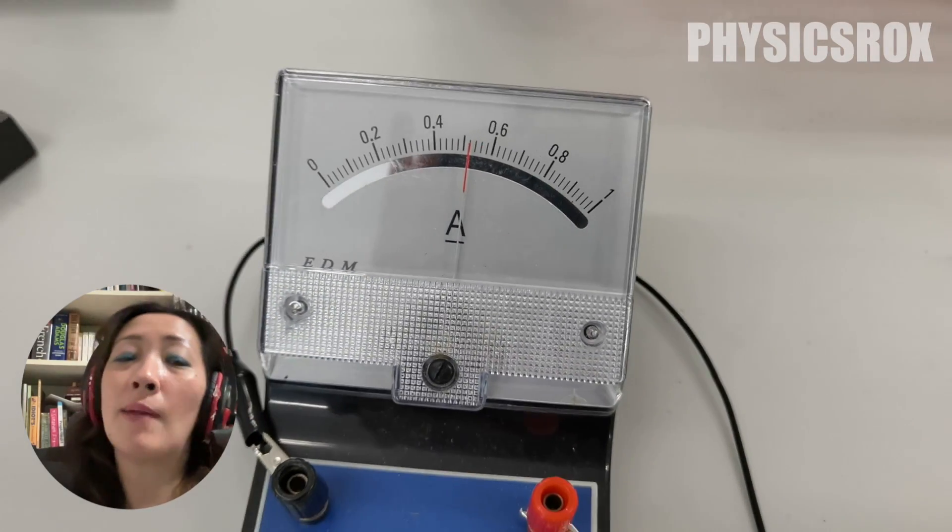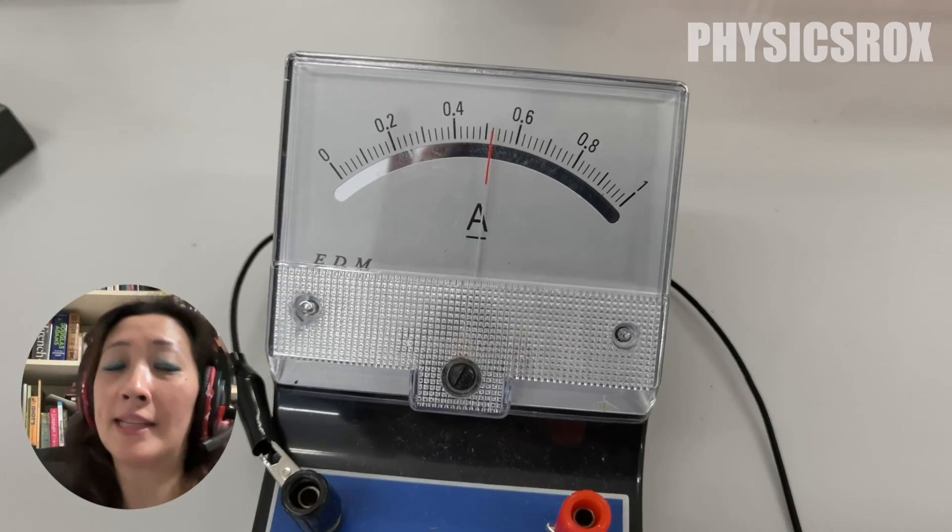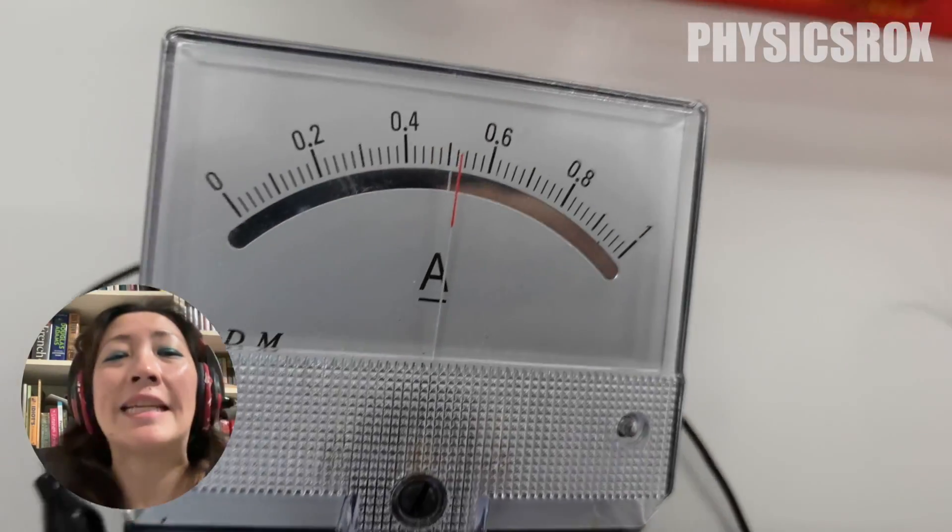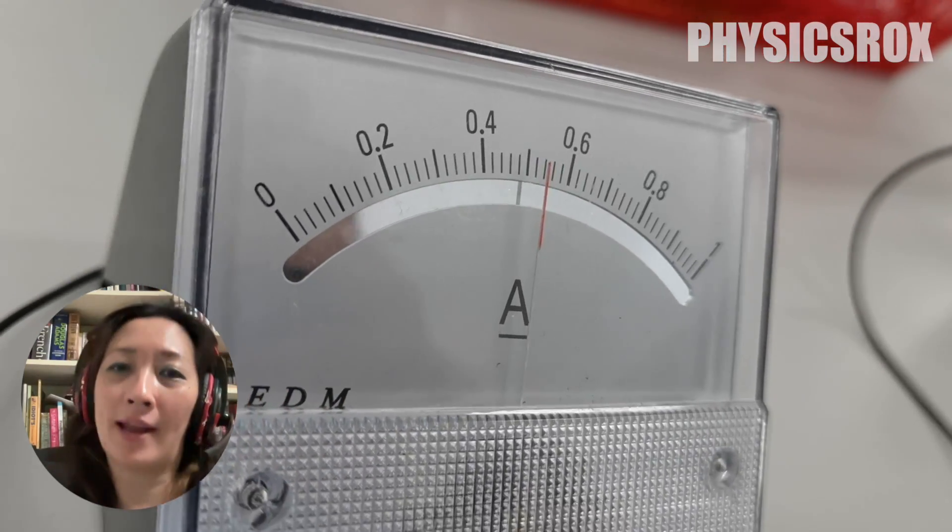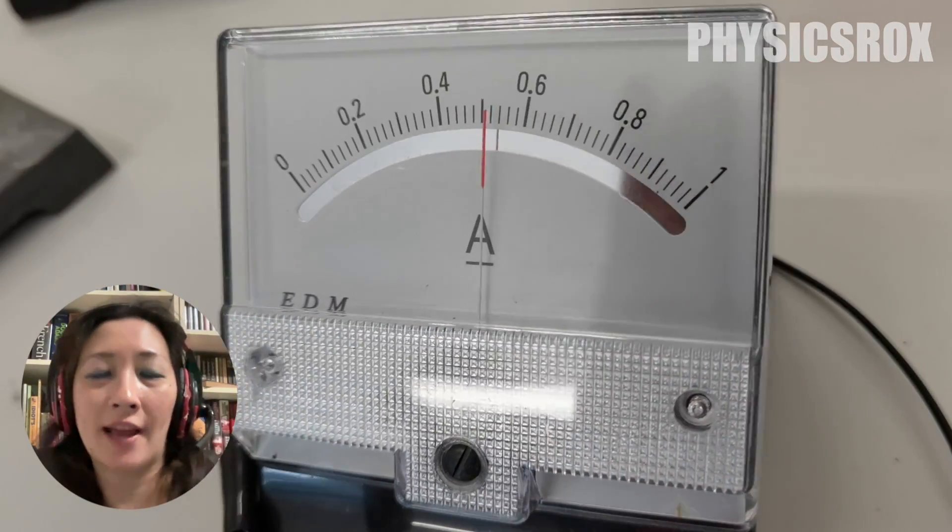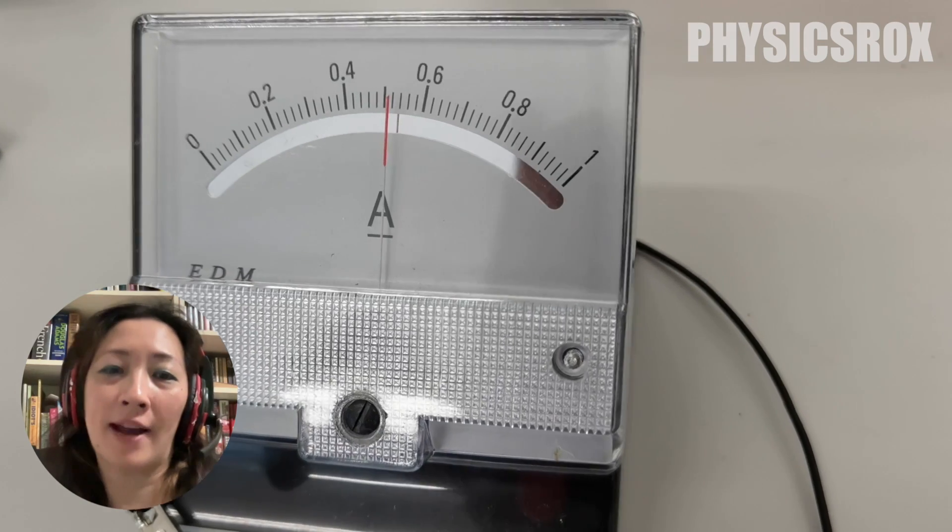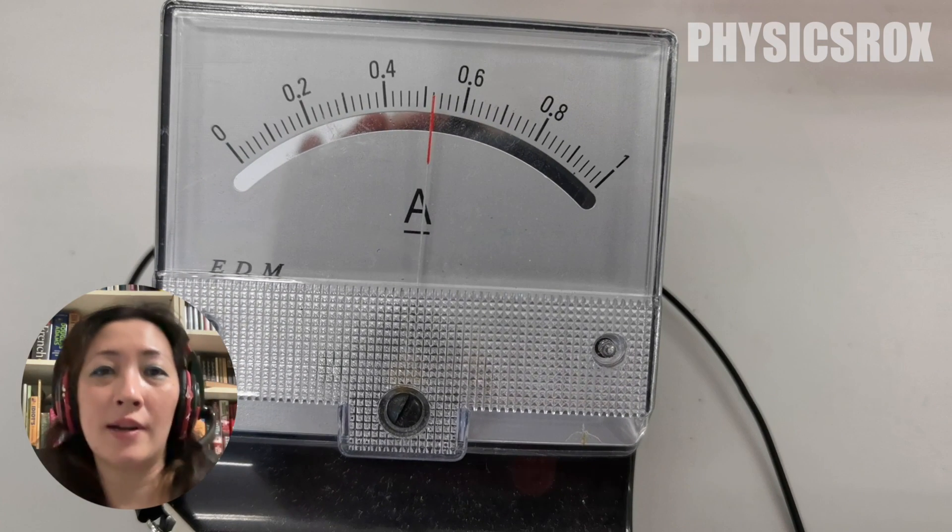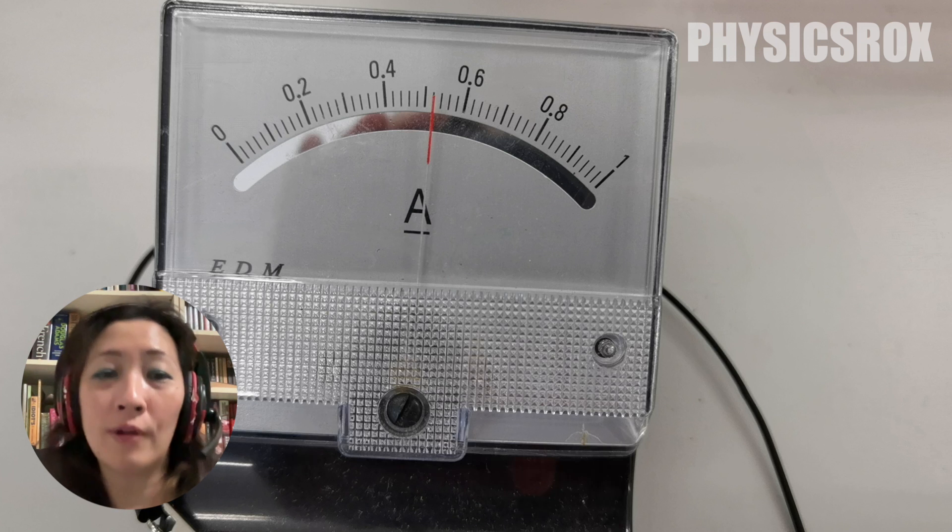So that's why anti-parallax mirrors are built into devices like this ammeter to assist us in avoiding parallax errors by ensuring that we can position our eye at the correct angle. All we need to do is ensure that when we're taking the reading, the needle is overlapping its own reflection just like this.